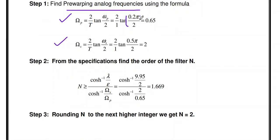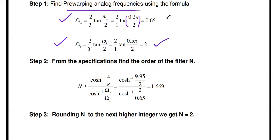While calculating this, you must put your calculator in radian mode — normally the calculator is in degree mode, so switch it to radian mode. Since π appears in the angle, the angle with π means 180 degrees. So type 2 × tan(0.2π/2) to get 0.65. Similarly, Ωs is calculated as (2/T) × tan(ωs/2) = 2 × tan(0.5π/2), giving Ωs = 2. So the two analog frequencies — passband frequency Ωp = 0.65 and stopband frequency Ωs = 2 — are calculated.